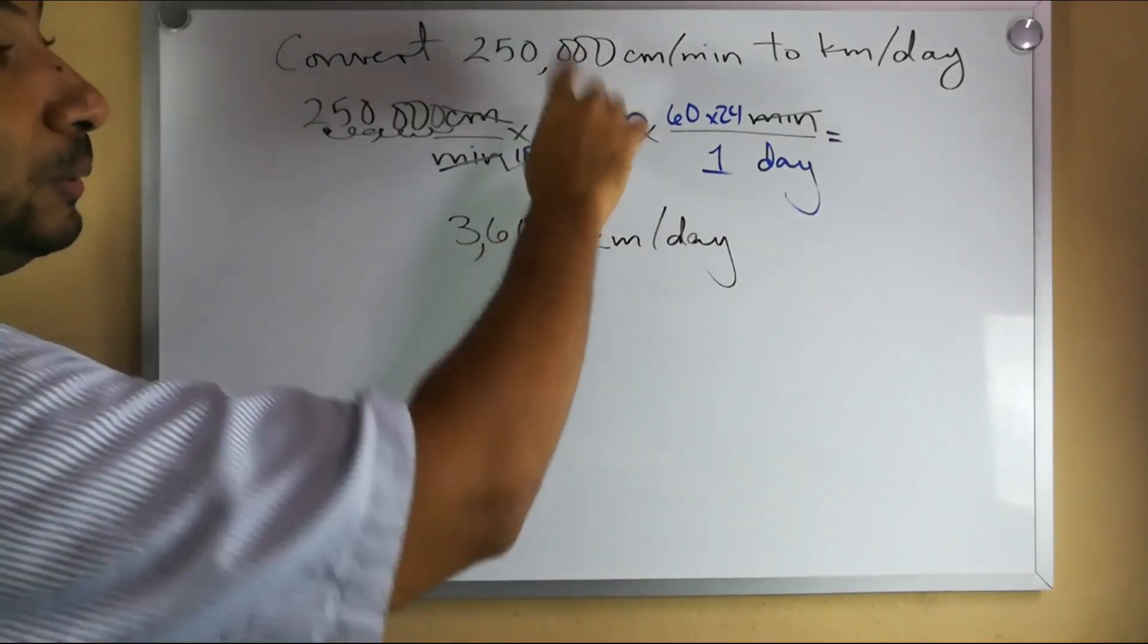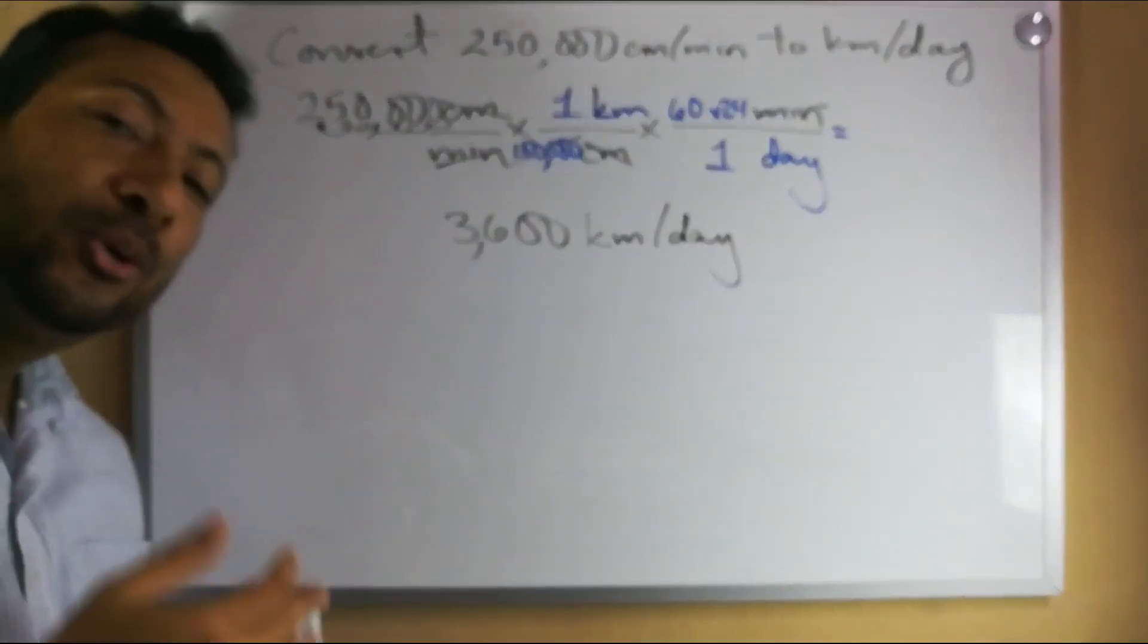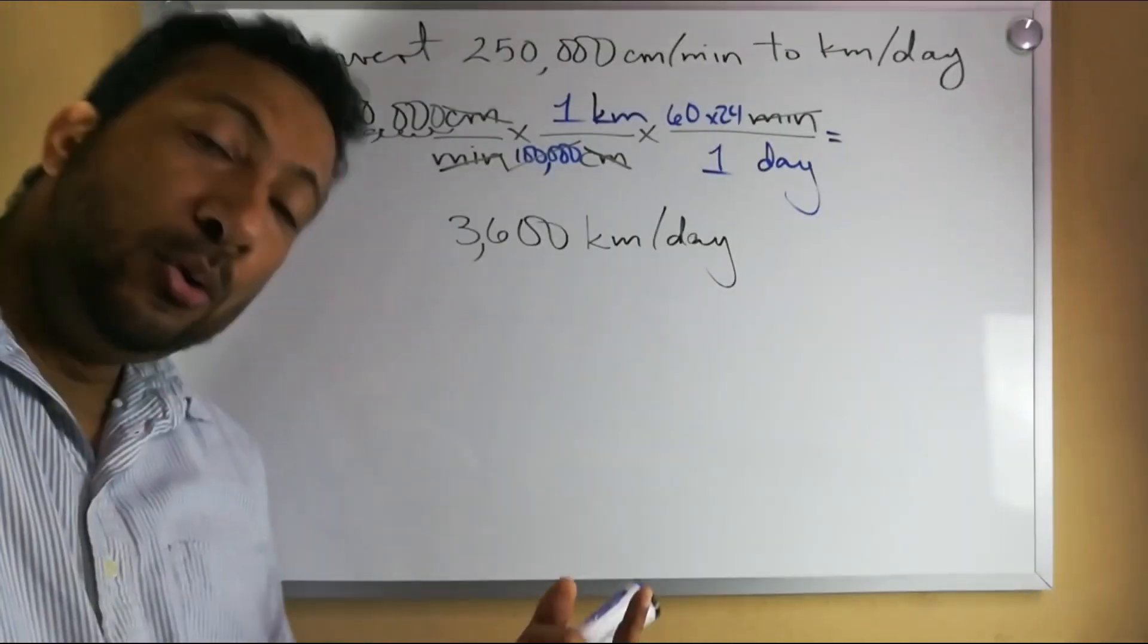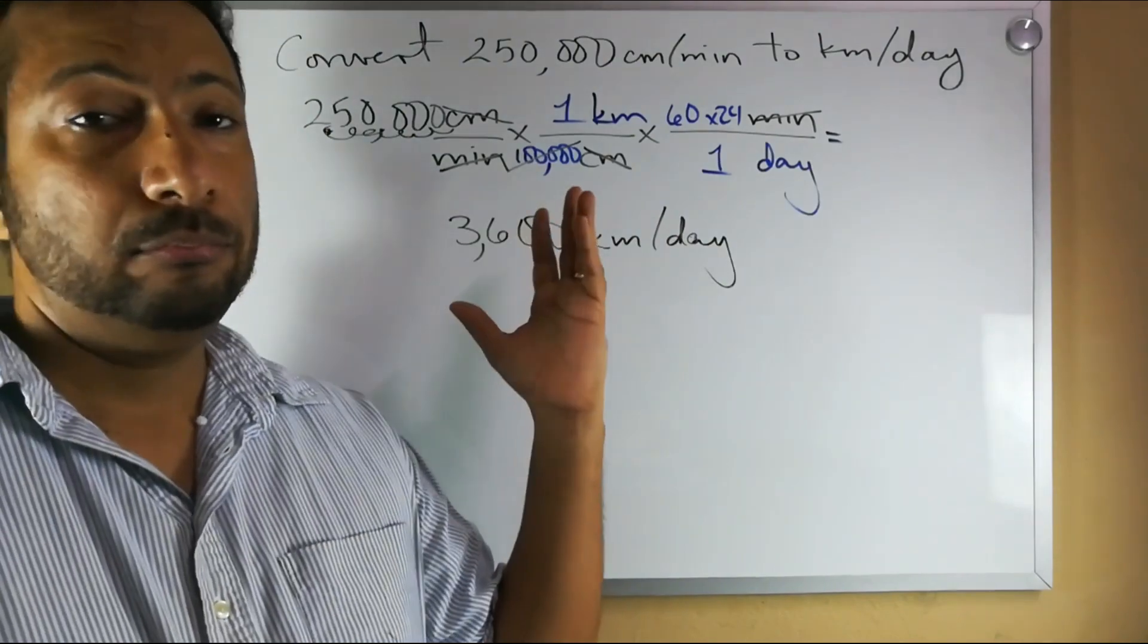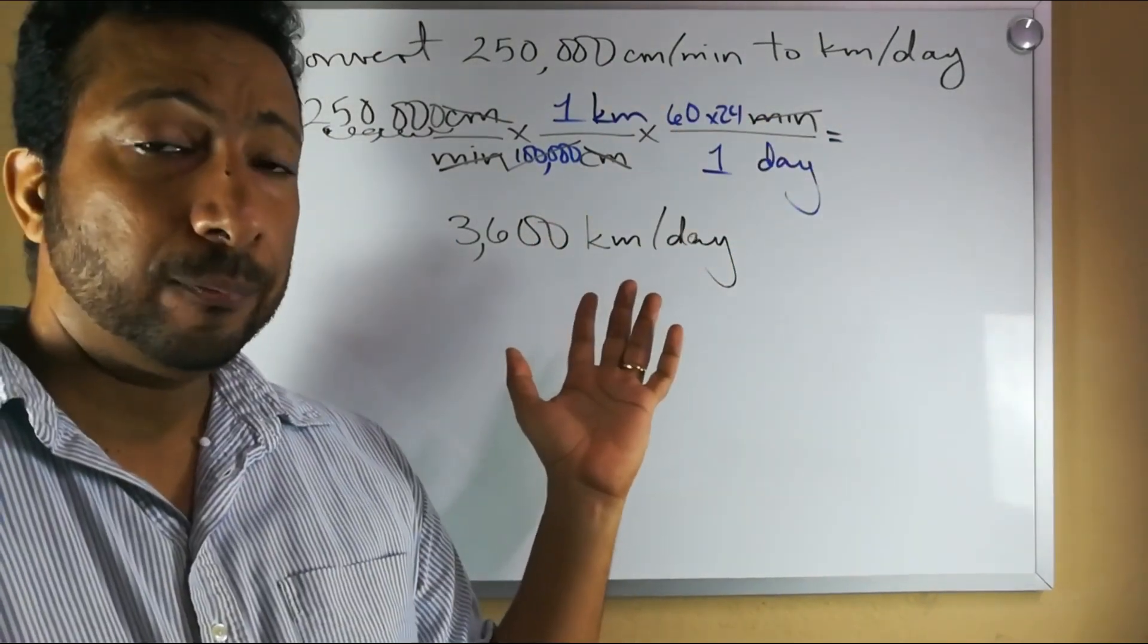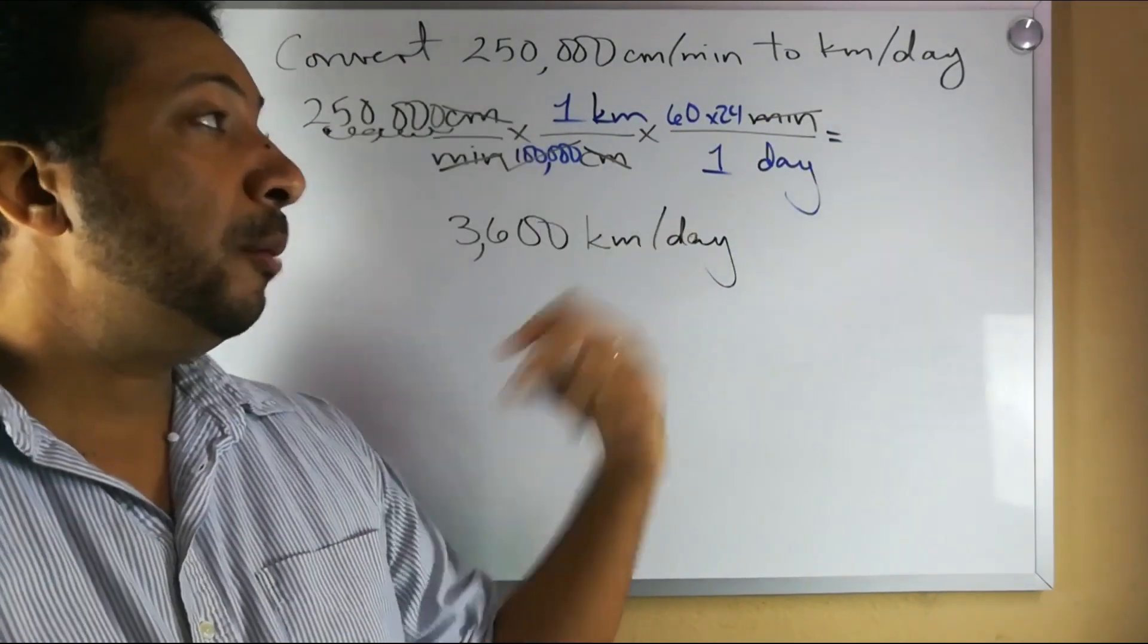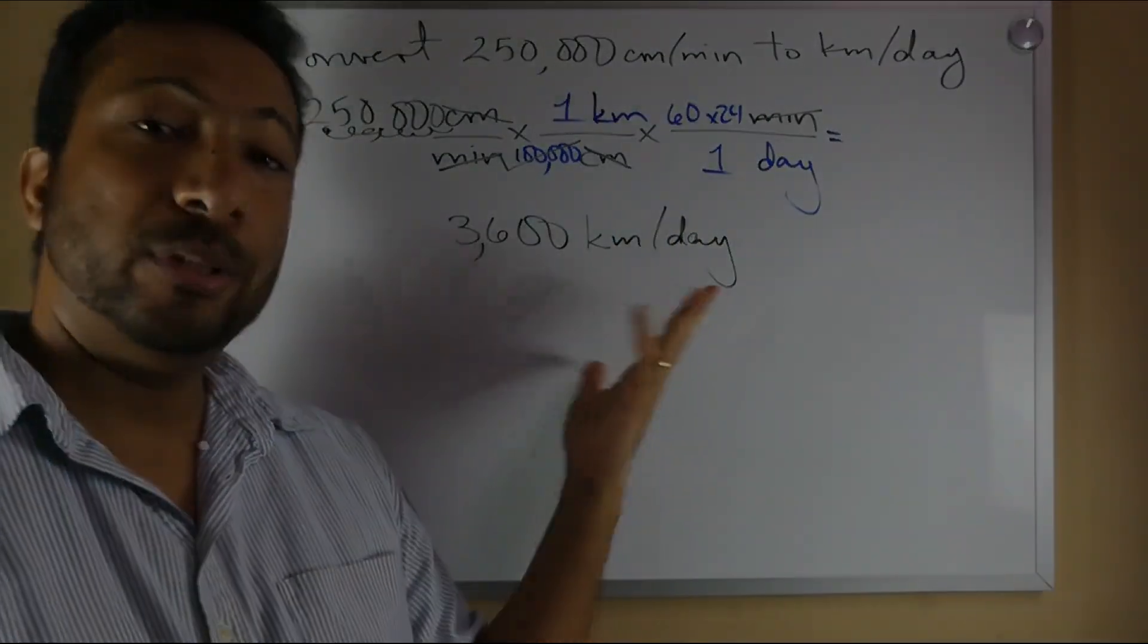So 3600 kilometers is how far that rocket ship would travel in a day. 3600 kilometers every day, that's equivalent to 250,000 centimeters every minute. So with that then girls, you now know how to convert between any unit of velocity, whether it be per year, per day, per meters, per hour, per second.